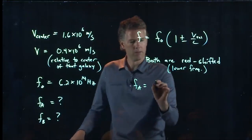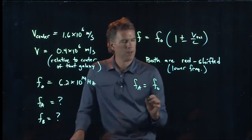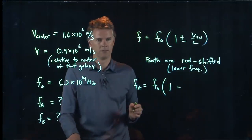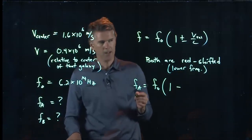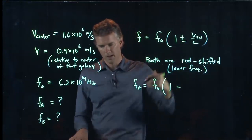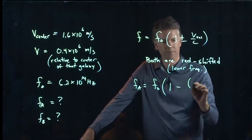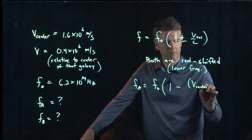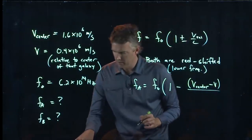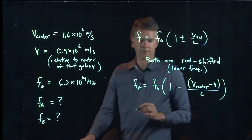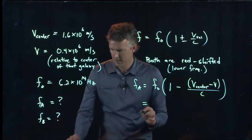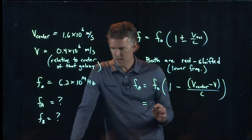Okay, so what is FA going to be? It is the natural frequency FO. And then we have 1 minus V relative. Okay, but remember the A side was coming towards us as the galaxy was moving away from us. And so we in fact need to put up here V center minus V all over C. Okay, and now we have all those numbers. And so we can punch them in and try it out.